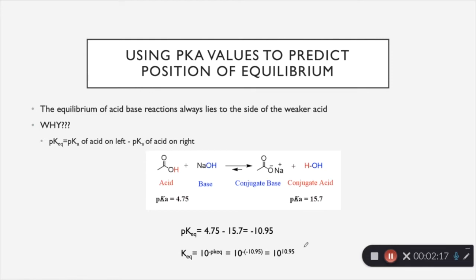So when we have a KEQ that is a very large number like this, we know that the equilibrium is going to lie to the right. And if we look here at the beginning, it says that the equilibrium always lies to the side of the weaker acid.